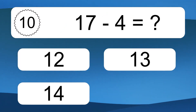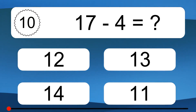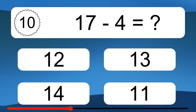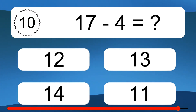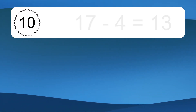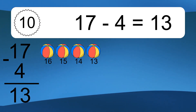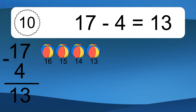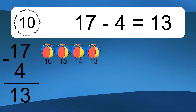17 minus 4 equals what? 17 minus 4 equals 13. Let's count it. 16, 15, 14, 13.